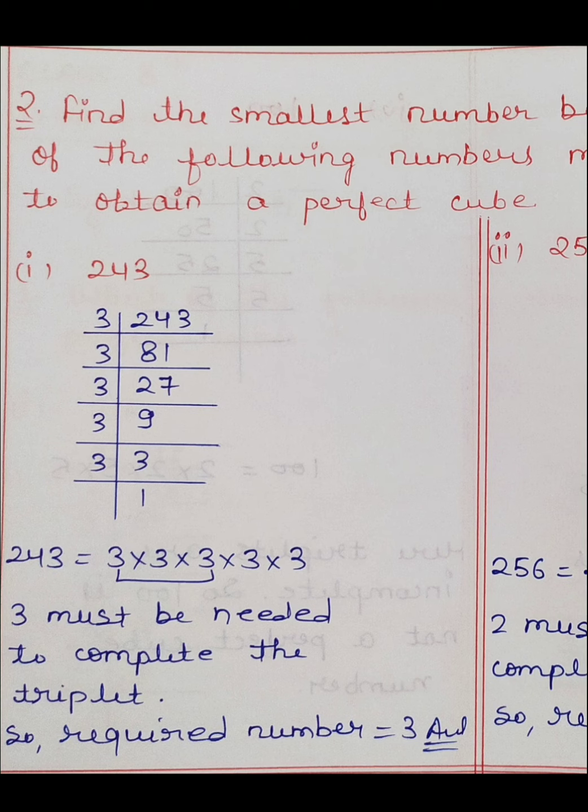Third is 72। 72÷2=36, 36÷2=18, 18÷2=9, 9÷3=3, 3÷3=1। Prime factors: 2 तीन times और 3 दो times। 2 का triplet complete हो गया। 3 केवल 2 times है — triplet बनाने के लिए एक बार 3 की ज़रूरत है। 3 must be needed to complete the triplet, so required number is 3।